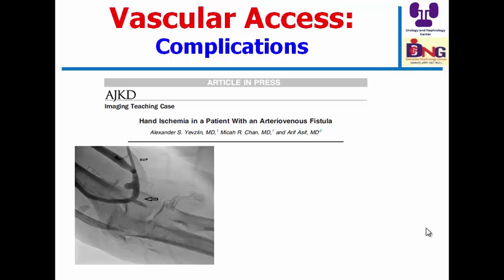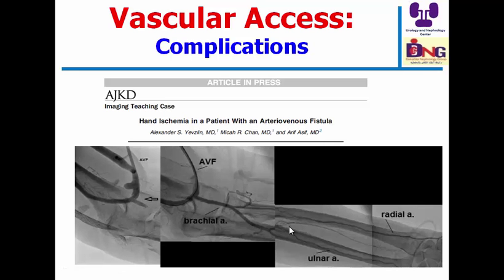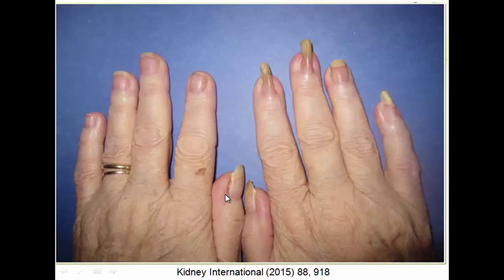One complication is hand ischemia — angiography shows absence of contrast in peripheral vessels; the radial artery and other arteries reappear after compressing the fistula. Another complication is pincer nail, which may be caused by venous hypertension created by the fistula. If this is annoying the patient, the only option may be to occlude the fistula, though in some cases the condition does not improve after occlusion.